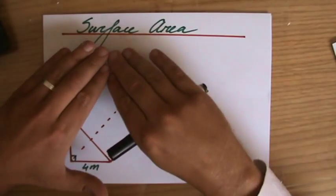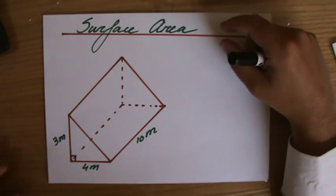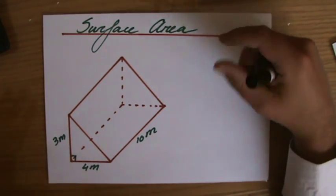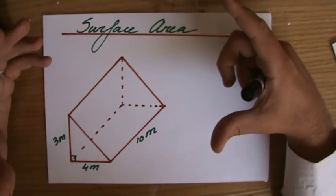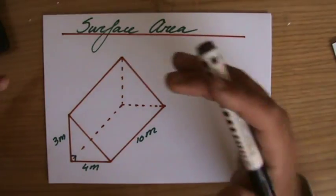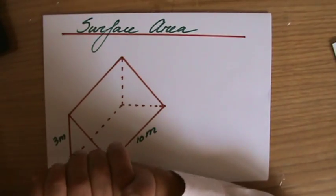We are still talking about surface area and we've discovered that surface area is the total area of the surface, all the faces, the area of all the faces added together.